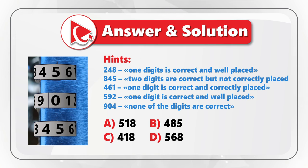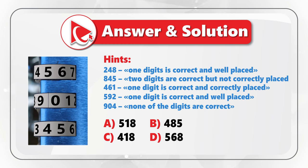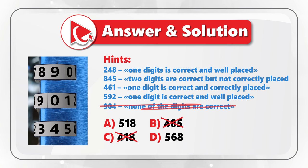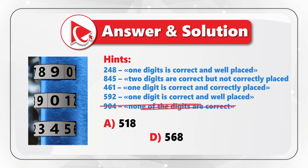As you might have guessed, you solve this problem through elimination. I'm going to start with hint number five because it's the most helpful of all. Once we've learned that in combination 904 none of the digits are correct, we can eliminate two possible answers. We can eliminate both choices B and C because both of them have digit 4, which is an incorrect digit.